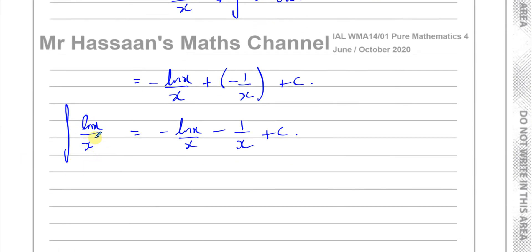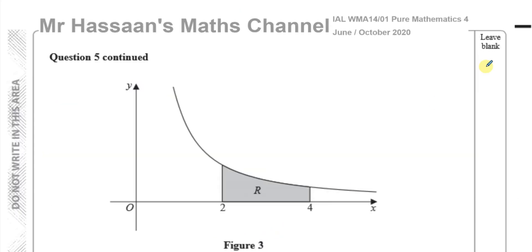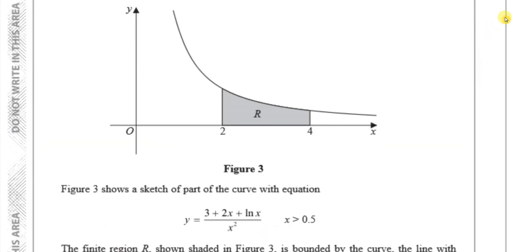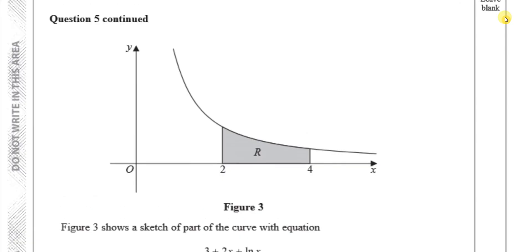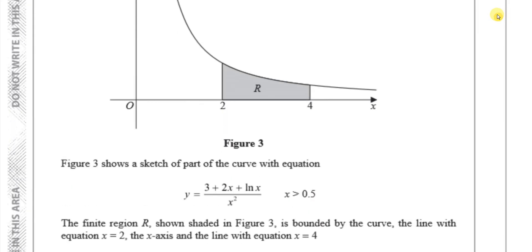Now moving on to Part B. Figure 3 shows a sketch of part of the curve with equation y equals 3 plus 2x plus ln x, all over x squared. The finite region R, shown shaded in figure 3, is bounded by the curve and the lines x equals 2 and x equals 4.